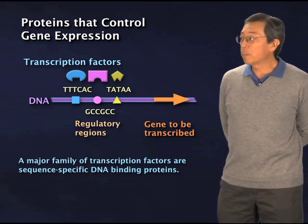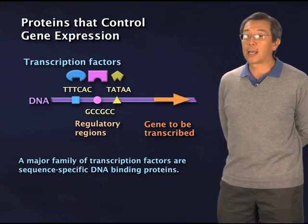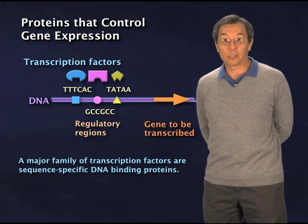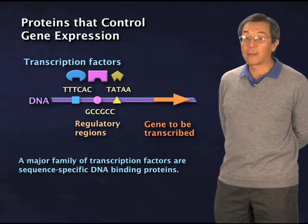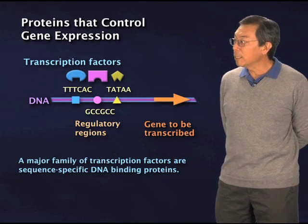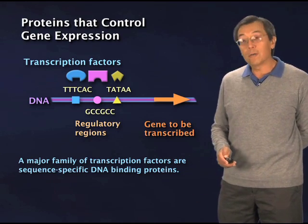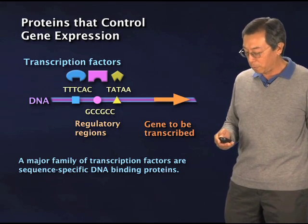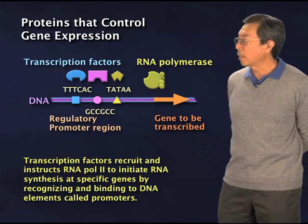It turns out that there are probably thousands of these transcription factors, because the number of genes that we have to control is on the order of 20,000 to 25,000 genes. So it turns out that you need a pretty large percentage of the genome devoted to encoding these regulatory proteins in order for a complex organism like ourselves to survive.